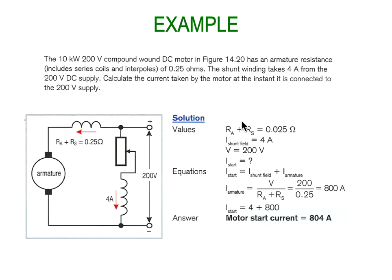Let's have a look at a little example about motor start current, just to get in our heads that it takes a fair bit of current to get a motor started. Here we've got an example of 10 kilowatts at 200 volts. It's a compound motor, which gives us the best of both worlds, and has an armature resistance of 0.25 ohms.